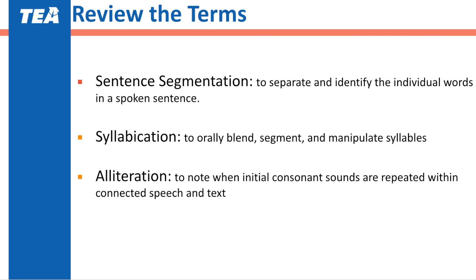We are going to start by reviewing some of the terms we're going to see across the module. The first term is sentence segmentation — the ability to separate and identify words in spoken language. The second term is syllabication — the ability to orally blend, segment, and manipulate syllables. The third term is alliteration — the ability to note when an initial consonant sound is repeated within connected speech.